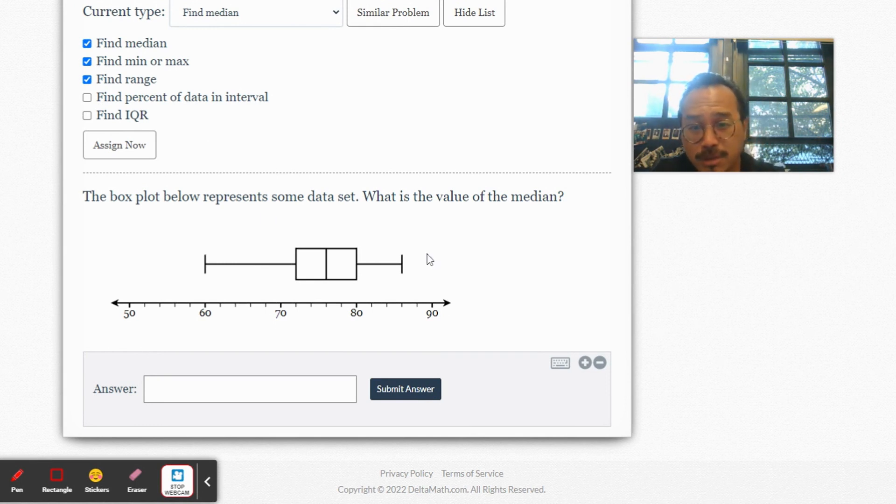Okay, here we go. Here's our box plot. What do I want to know? What's the value of the median? Where's the middle number? It's right here, this line right here. Look at my arrow down here. So that's, I think these go by five, no, by two: 70, 72, 74, 76, 78. Yep, so what is that? 76.